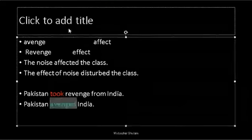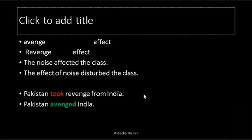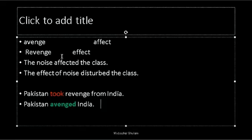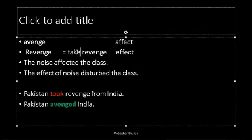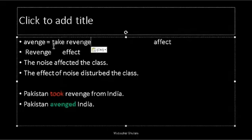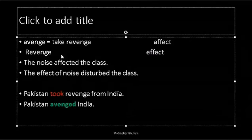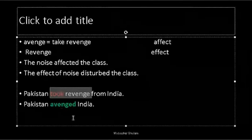Just as 'advise' (verb) is equal to 'give advice,' similarly 'avenge' (verb) is equal to 'take revenge.' In the phrase 'took revenge,' 'took' is the verb. So 'took revenge' can be replaced by 'avenged.' You can say 'He took revenge' or you can say 'He avenged.' So these were a few pairs of words that I have discussed with you.